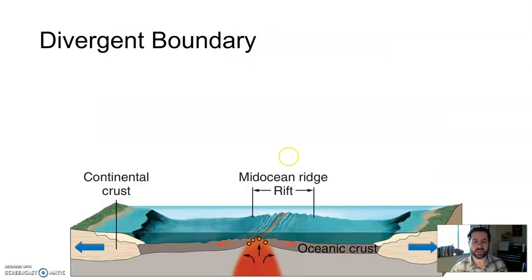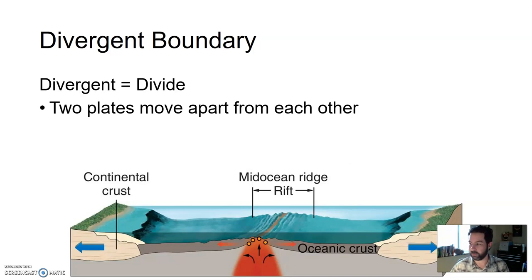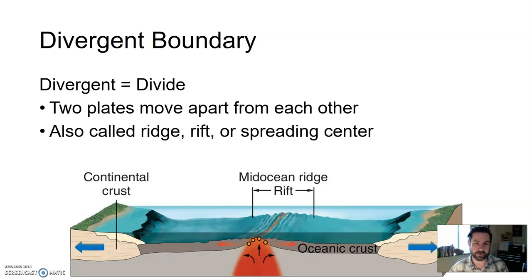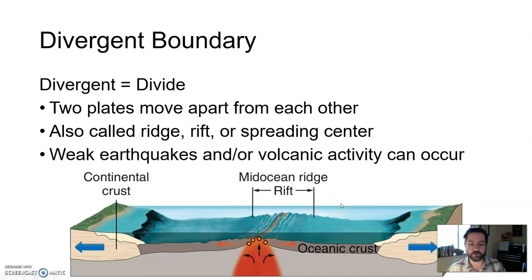Now, divergent boundaries. When you think convergent, think collide; divergent, think divide. Two plates move apart from each other — sometimes called ridge, rift, or spreading centers. If it's underneath the ocean, it's typically called a mid-oceanic ridge. If it's on dry continental crust, we call it a rift, like the great rift valley of Africa, which sits along a divergent boundary. You do get some weak earthquakes and sparse but weak volcanic activity at divergent boundaries.